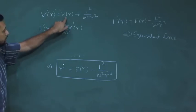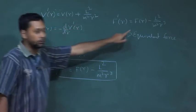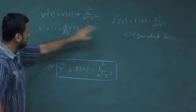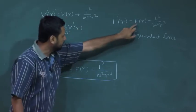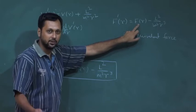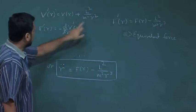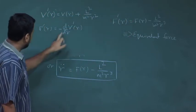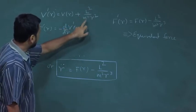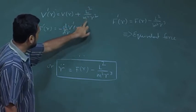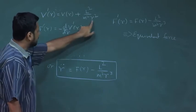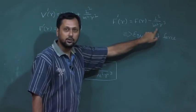Check that: −dV/dR gives the first term, which is the standard force term due to the presence of the central field. The second term, if you perform this derivative, gives L²/M² times a minus sign divided by r³, which is exactly equivalent to the centrifugal-like term.